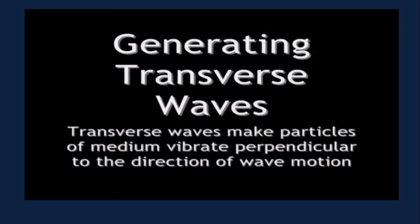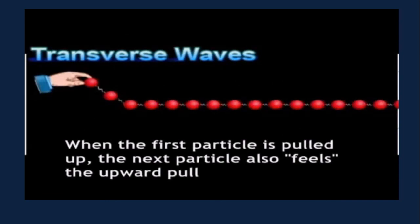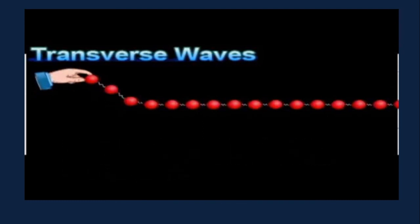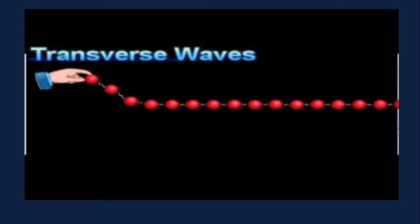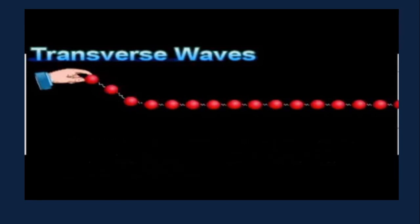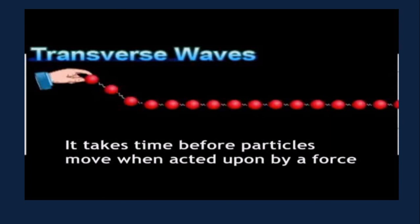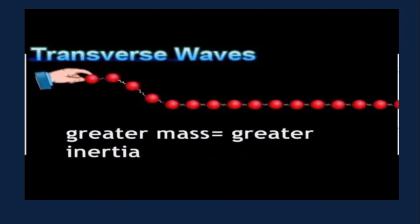Let us see how transverse waves are generated. Transverse waves make particles of the medium vibrate perpendicular to the direction of wave motion. When the first particle is pulled up, the next particle also feels the upward pull. The third particle is also pulled by the second particle. Inertia is the tendency of objects to resist change in motion when pushed or pulled. It takes time before particles move when acted upon by a force. Greater the mass, greater is the inertia.